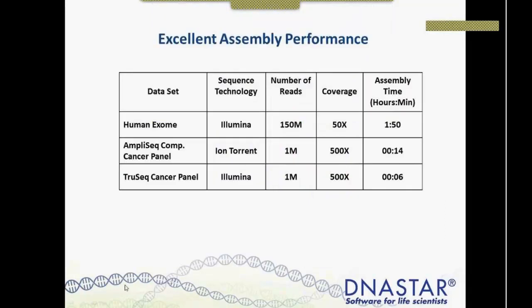One of the things we want to talk about with NGS data sets is the kind of performance we can get. The first question that comes up is: can desktop software compete or perform comparably to software running on a Linux server? We like to show some of the assembly times to show that yes, on a modest computer, we can get really nice assembly performance. This shows small data sets with exomes assembling in about an hour and a half to two hours. The panels we'll discuss today — Ion Torrent and Illumina, which tend to be very deep, say 500x coverage or more — can take just several minutes to assemble. If you have 100 samples, it's nice to have an assembler that can handle that job in just a few minutes.